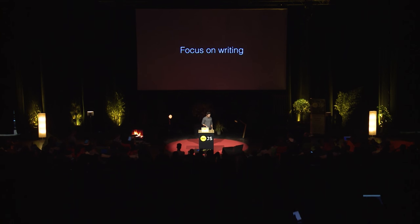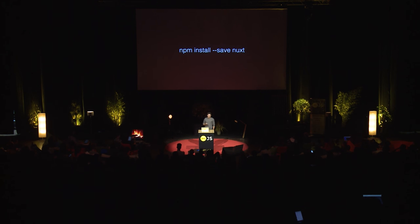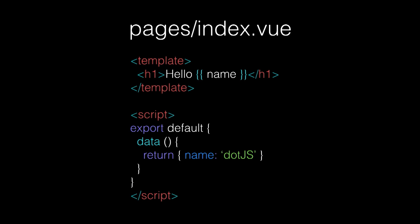The only thing you have to do is focus on writing Vue files. Let's see a quick example. First, we need to install Nuxt as a dependency of your application with NPM, and then we can create our first page. We have a template displaying the name property, and we set this property to Nuxt.js. Then we can launch Nuxt.